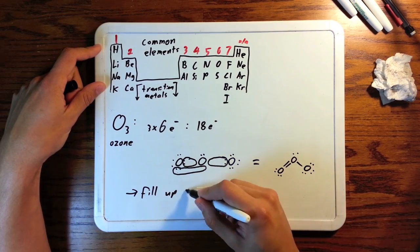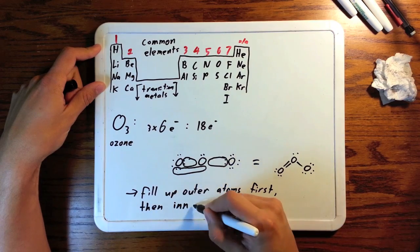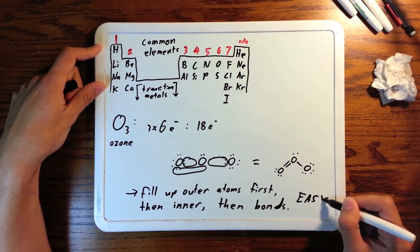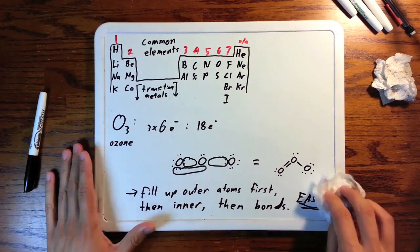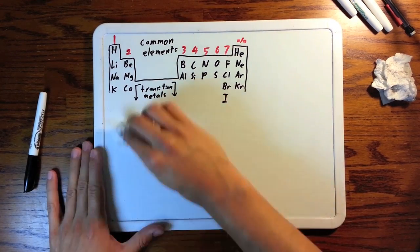Just to recap, you fill up the outer atom's octets first, then you put any remaining electrons on the center atom, and then you use bonds to give it an octet. This should help you with all simple Lewis structures, but we need to learn about formal charge before we can finish talking about this.